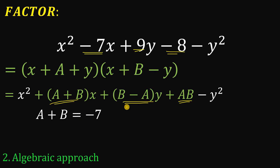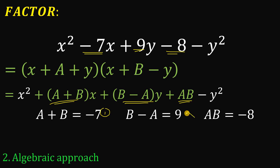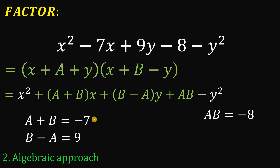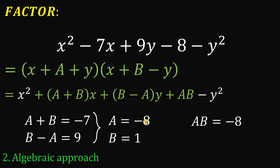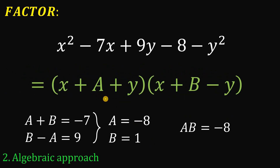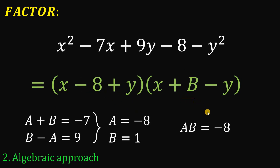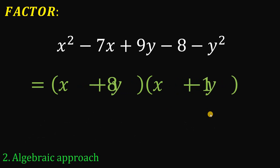So we get three equations: a plus b equals negative 7, b minus a equals 9, and ab equals negative 8. Adding the first two equations eliminates a, giving 2b equals 2, so b equals 1. With b equal to 1 and a plus b equal to negative 7, we get a equals negative 8. The third equation verifies this: negative 8 times 1 equals negative 8. So in our factored form, a is negative 8 and b is positive 1.